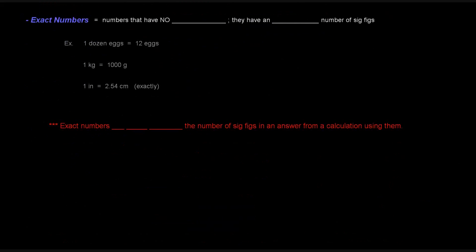Next: exact numbers. Exact numbers are numbers that have no uncertainty at all — they have an infinite number of significant figures. This concept is really important when it comes to conversion factors.